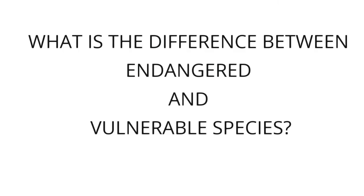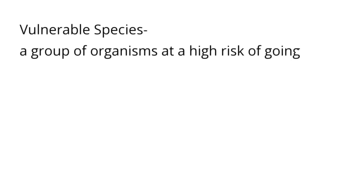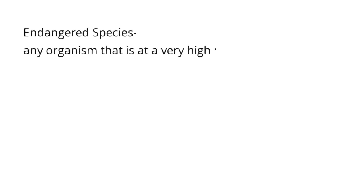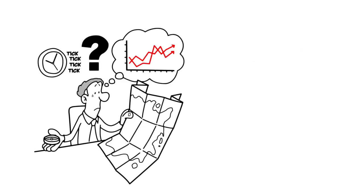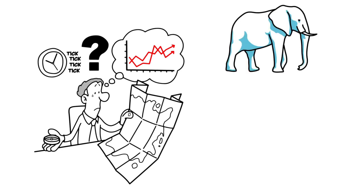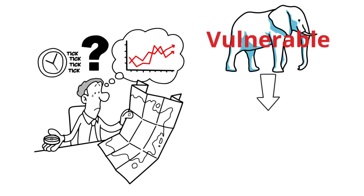What is the difference between endangered and vulnerable species? Vulnerable species are a group of organisms at a high risk of going extinct, and their extinction can occur after several years. Endangered species are any organisms at a very high risk of becoming extinct, and they can go extinct after a few years. Extinction is a flow process that can take hundreds or thousands of years — it all starts with a species becoming vulnerable, then endangered, and finally extinct.